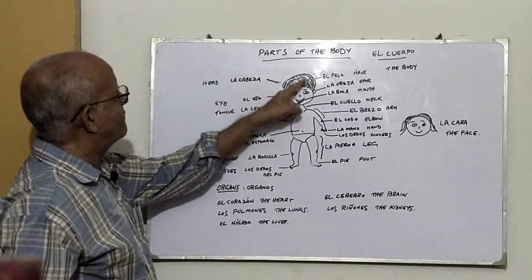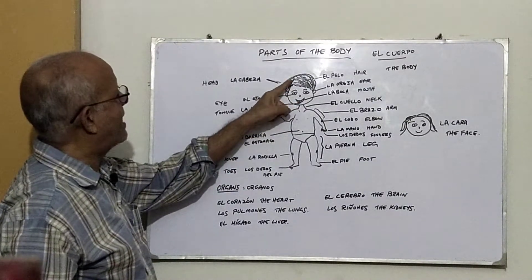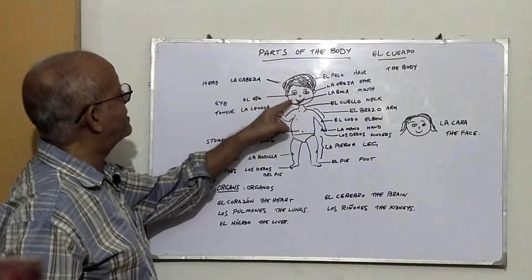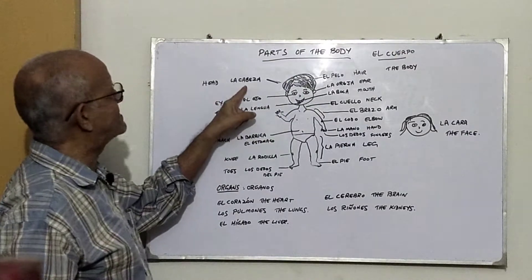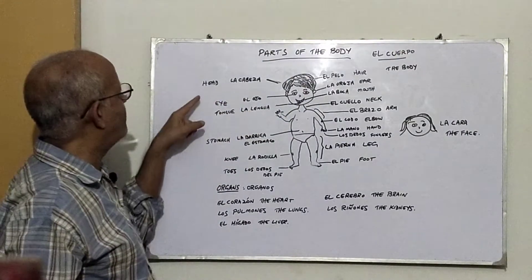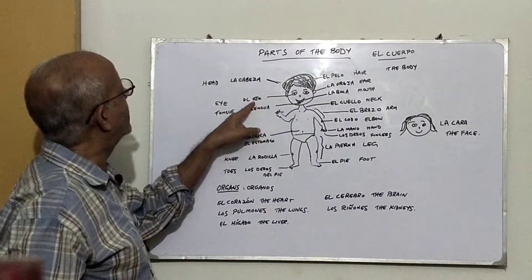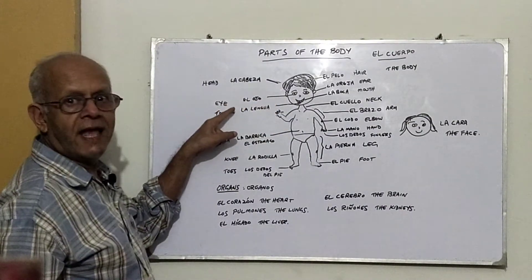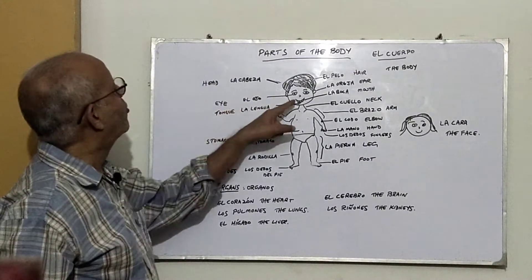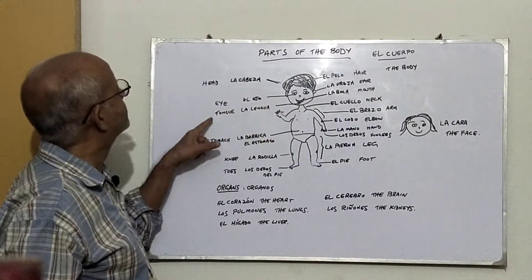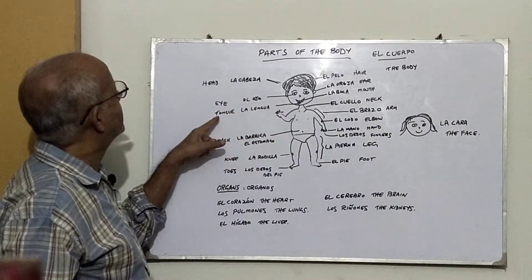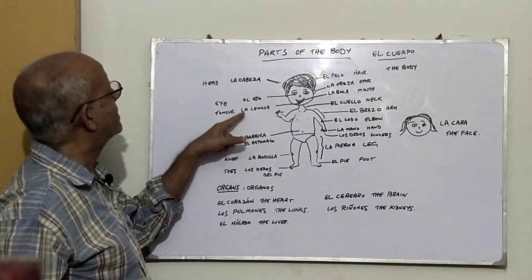First, the head - the whole face and the hair and the top of the head, everything is called la cabeza. Then we have the eye - el ojo. Both of them, los ojos. The tongue - la lengua.